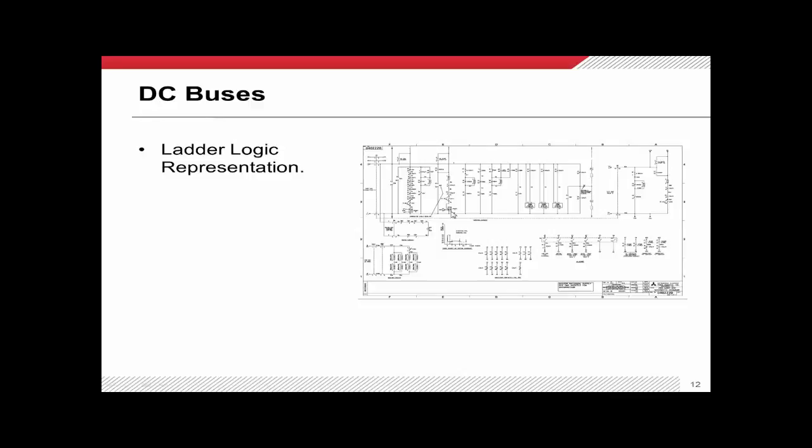Before we dive into the nuts and bolts, I'd like to point out that this is ladder logic representation. There are a number of DC buses — I'm moving my cursor along the two main ones — but notice there's another DC bus here that extends down to your motor charging circuit, and there's actually an AC bus that runs the heaters in your circuit breaker.